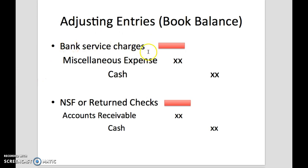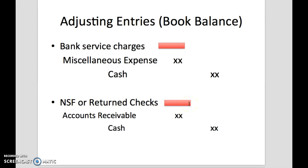For bank service charges, that will decrease your cash balance. Since bank service charges decrease your cash, we put cash on the credit side and charge that to miscellaneous expense — so that's a debit to miscellaneous expense. For NSF or return checks, this is also a minus to our book balance, so we are crediting cash. Then we re-establish our accounts receivable because we need to collect from our payor — that's a debit to accounts receivable.